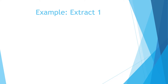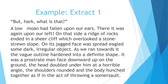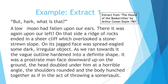This is the first example, from extract 1. "But hark, what is that? A low moan had fallen upon our ears. There it was again upon our left. On that side, a ridge of rocks ended in a sheer cliff which overlooked a stone-strewn slope. On its jagged face was spread-eagled some dark irregular object. As we ran towards it, the vague outline hardened into a definite shape. It was a prostrate man faced downward upon the ground. The head doubled under him at a horrible angle. The shoulders rounded and the body hunched together as if in the act of throwing a somersault." The extract is from The Hound of the Baskervilles by Arthur Conan Doyle, written in 1901.